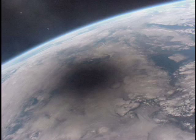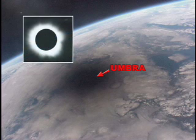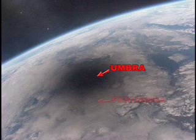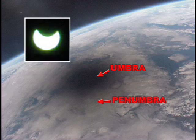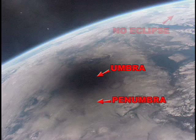Only those people standing directly in the full shadow of the Moon, known as the Umbra, see a total eclipse. Someone near the edge of the shadow, called the Penumbra, will see a partial eclipse, while someone outside the shadow will see no eclipse at all.